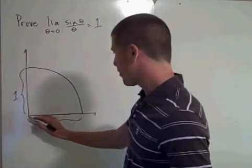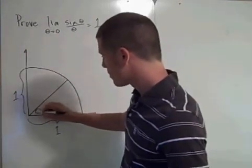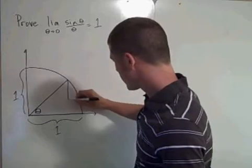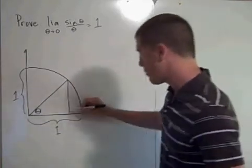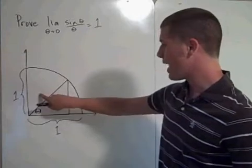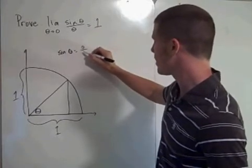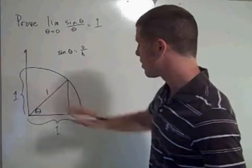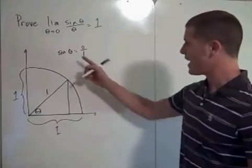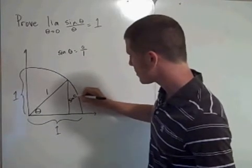Let's start with our angle theta. We'll pick an angle here on the unit circle. If we drop a perpendicular here and consider the sine of theta as opposite over hypotenuse — the hypotenuse is the radius of the unit circle, which is 1 — then sine of theta is opposite over 1, which means the opposite is the sine of theta. So this length right here is sine of theta.